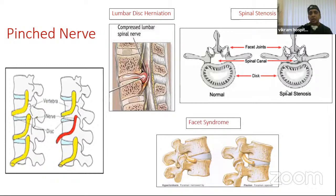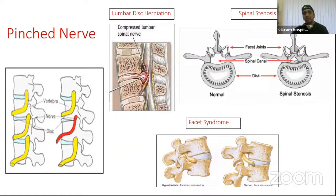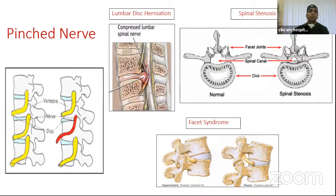Another cause of a pinched nerve is facet syndrome, where there is a problem within the facet joint — there may be a facet cyst, or during extension or hyperlordosis the facet can project into the foramen, compressing the nerve. During flexion, the foramen size increases, giving relief. Typically these individuals have pain on lying down but are okay during the day when walking, often stooping forward slightly for relief. When they lie supine, extension of the spine causes the facet joint to press on the nerve root.